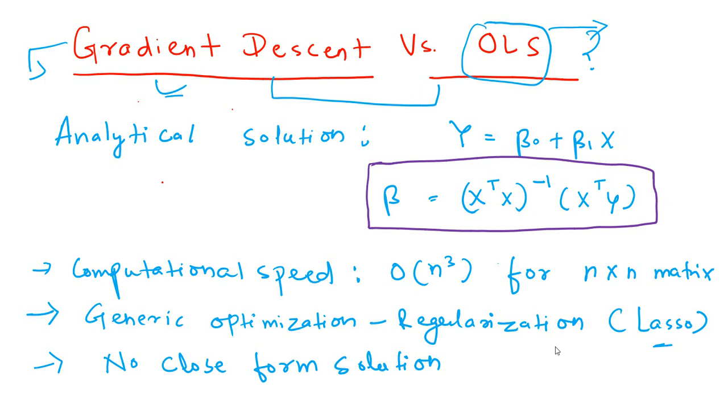I'll try to answer this question as to why use gradient descent when you have OLS as a technique already in place which gives you analytical solution. Here is a linear regression, the simplest form. You have Y the target variable and you have X which is the independent variable or the predictors, and we have two coefficients.